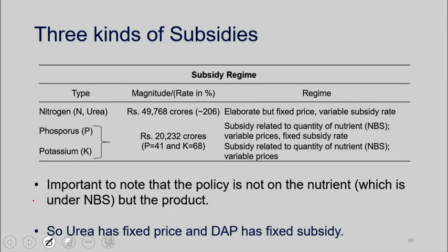There are three major fertilizer products in India — N, P, and K — basically Urea, DAP, and MOP. Urea, we subsidize at about 206%. In the case of Urea, we fix the price that the farmer can buy it at — the farmer price is fixed at about 53.60. But for the other fertilizers, which are phosphorus and potassium-based, we now give a per-unit subsidy. The manner in which it's calculated is based on the underlying nutrients — that's why it's called the NBS, the nutrient-based subsidy.